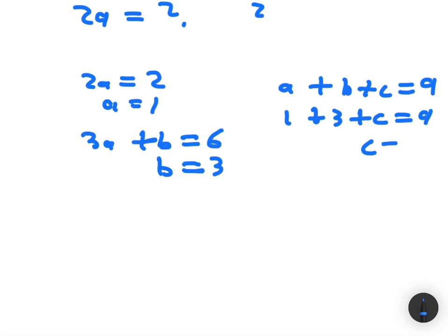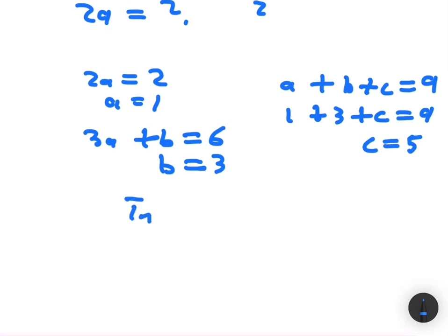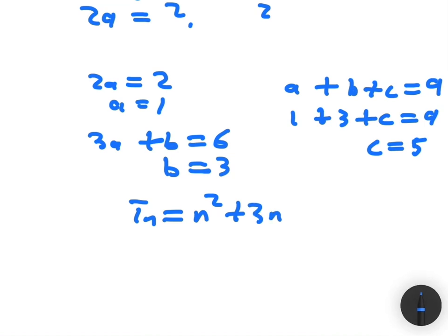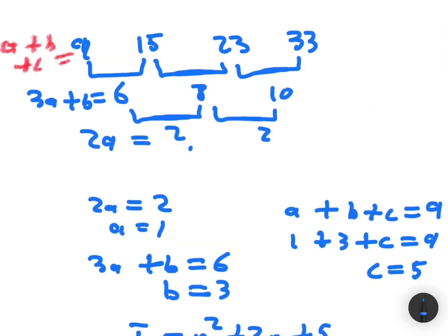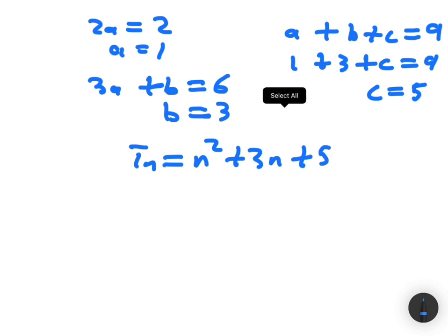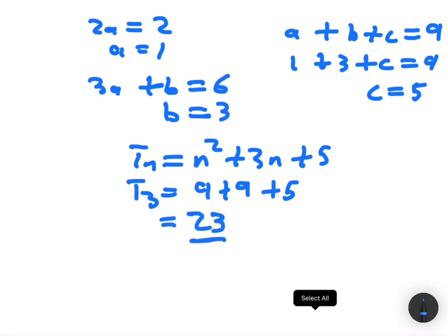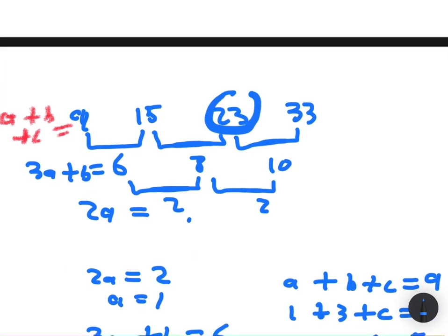So the general term is tn = n² + 3n + 5. Let's verify: t3 = 3² + 3(3) + 5 = 9 + 9 + 5 = 23, and that's exactly the third term of the sequence. So t3 = 23, which is exactly what we were hoping to find.